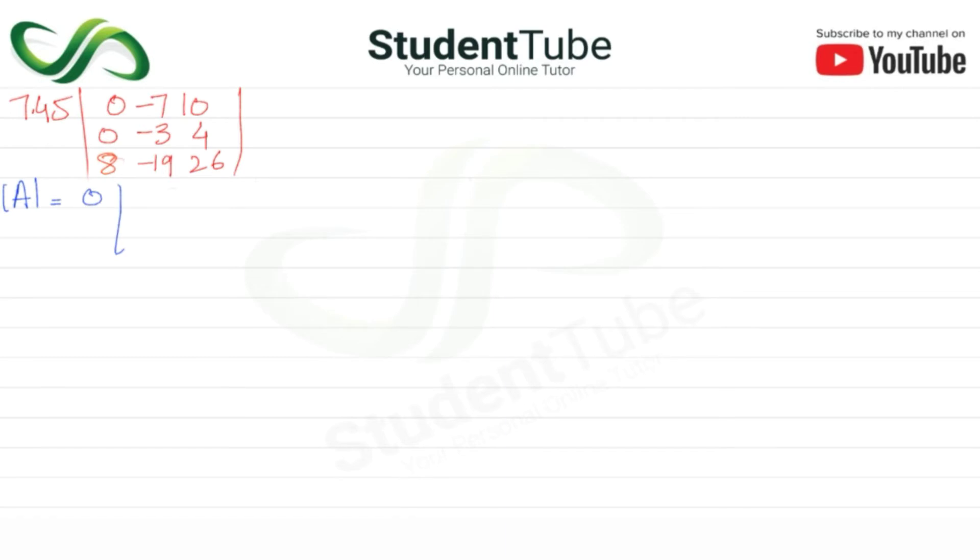We have minus 3, 4, minus 19 and 26, then minus 7. Now here we have 0, 4, 8.